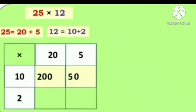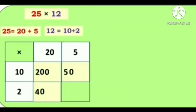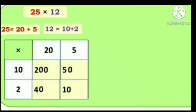Then we will multiply 10 into 5. Answer is 50. Then we will multiply 2 into 20. Answer is 40. And last, 2 into 5. Answer is 10.